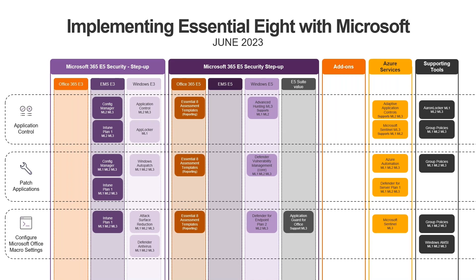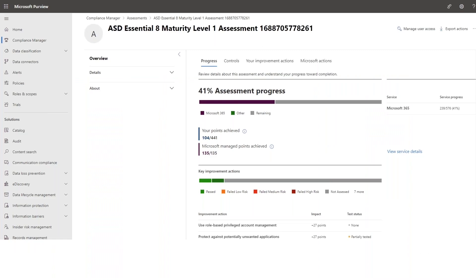There are various licenses that can help you with Essential 8, from the Business Premium SKU for small to medium businesses up to the E5 add-on or full E5 license. Andrew can help you with licensing questions on these. While we're on the topic of the E5 license, take a look at this — Microsoft built an Essential 8 maturity tracker and dashboard.